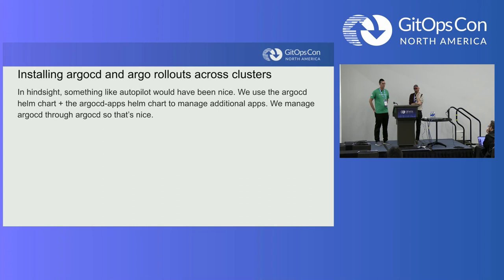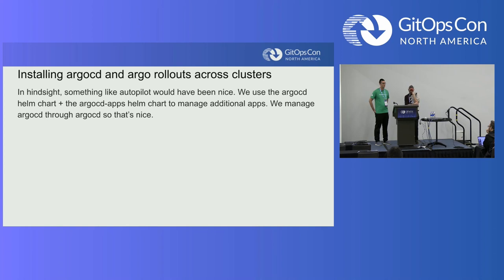Another thing that held us up was installing Argo CD and Argo Rollouts across clusters. We had seen Argo Autopilot, which wasn't yet fully released when we were installing. In hindsight we would have used something like that. What we did use was the Argo CD Helm chart and the Argo CD Apps Helm charts to manage additional apps — and we do manage Argo CD through Argo CD itself.